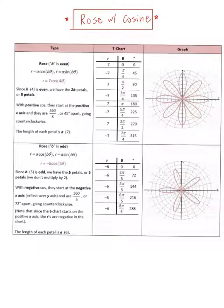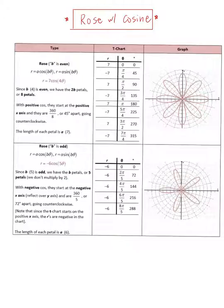When b is odd — for example, r equals negative 6 cosine 5θ — b is 5, so we get b petals (5 petals). Unlike the even case, we don't multiply by 2. Since it's negative 6 cosine, it starts from the negative x-axis. Dividing 360 by 5 gives 72 degrees apart going counterclockwise. The length of each petal is the absolute value of a, which is 6.